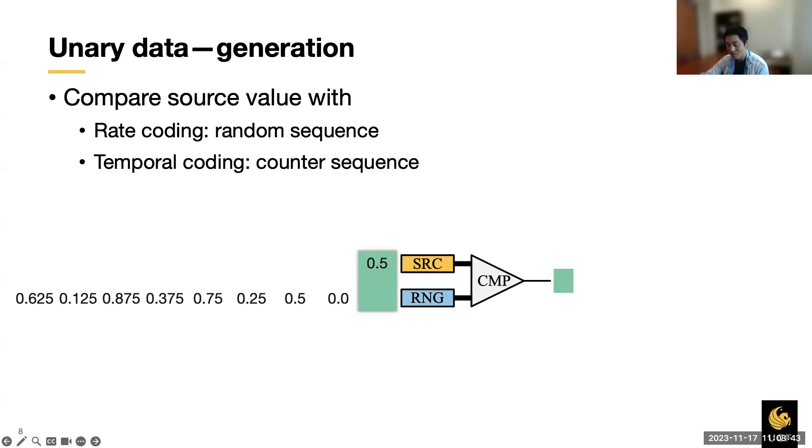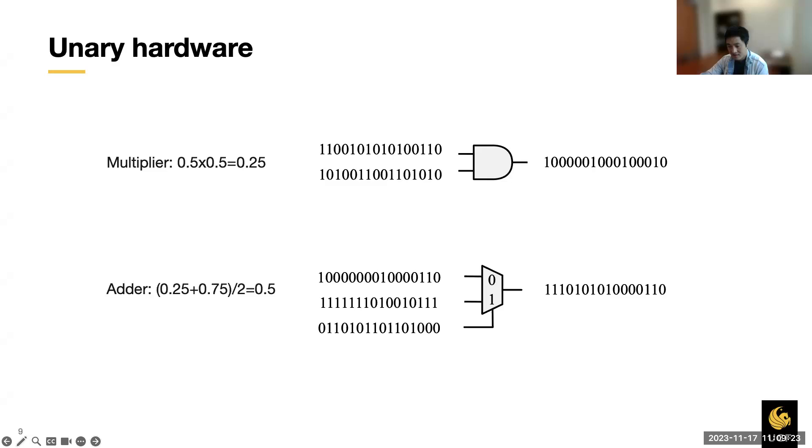Then I'll show you how the unary bitstreams are generated. In order to generate those unary data from the source binary data, we need to compare the source value with a number sequence. For rate coding, this number sequence is a random sequence from a random number generator. I will show you an example here. One bit of the unary bitstream is generated per cycle, and the probability of ones in the bitstream gradually converges to match the source value. Thus, the longer the bitstream is, the more accurately it reflects the source value. For temporal computing, this number sequence is the output sequence of a counter.